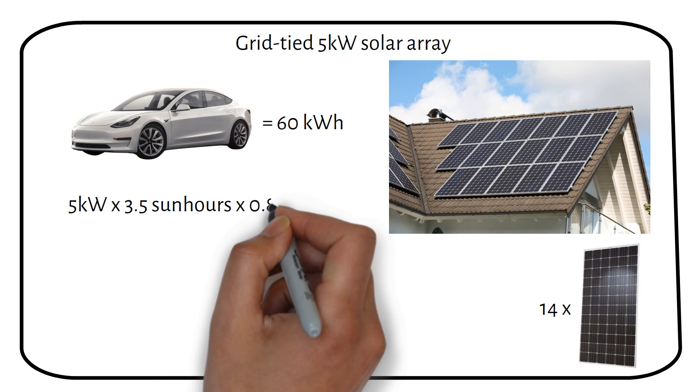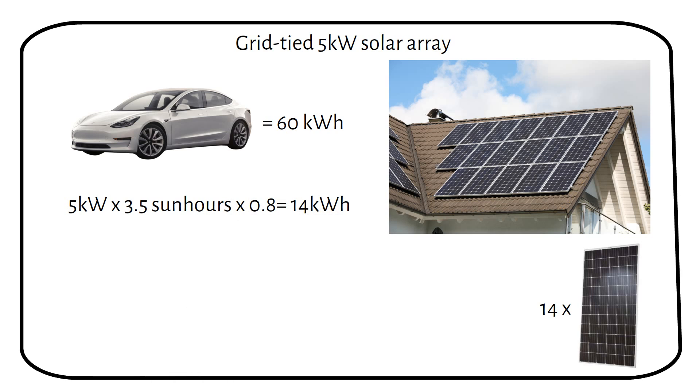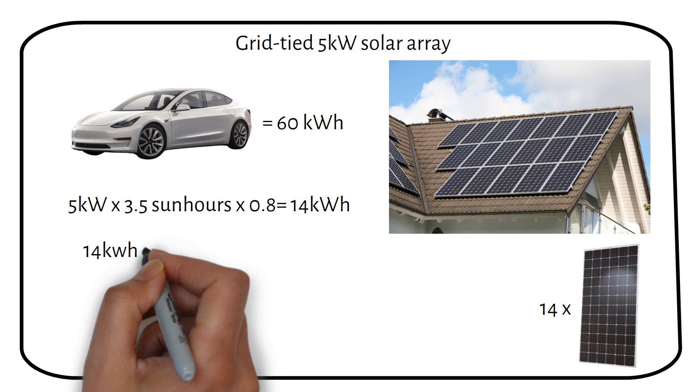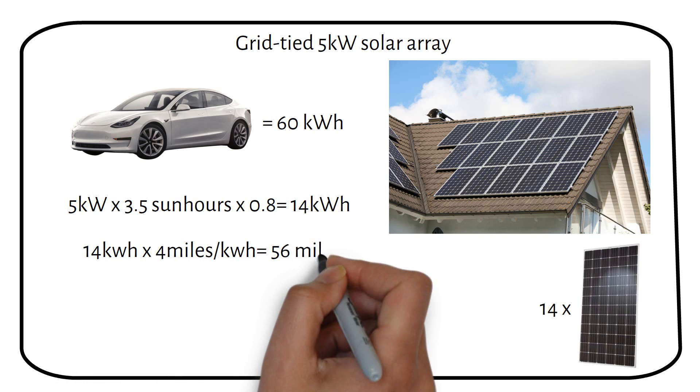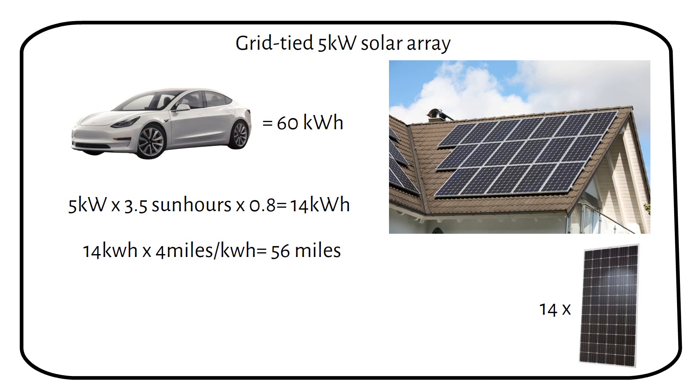a 5-kilowatt solar array can generate around 14 kilowatt hours of electricity. Given that 1 kilowatt hour can drive a car for 4 miles, a household with such a solar setup can expect to add approximately 56 miles of driving range each day. This figure, however, is an average.